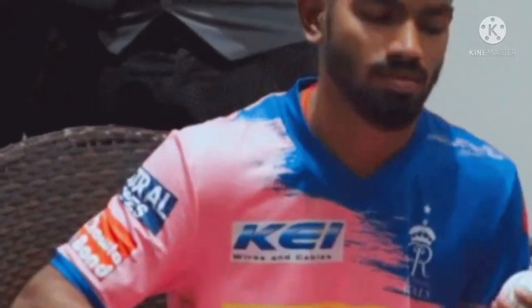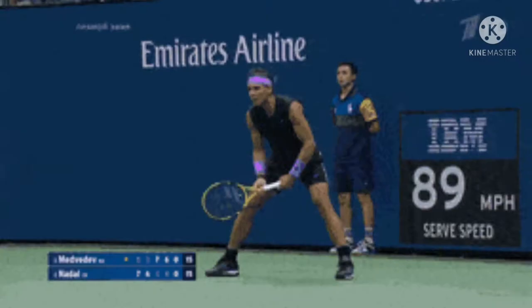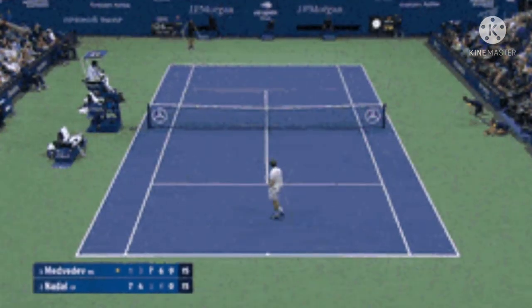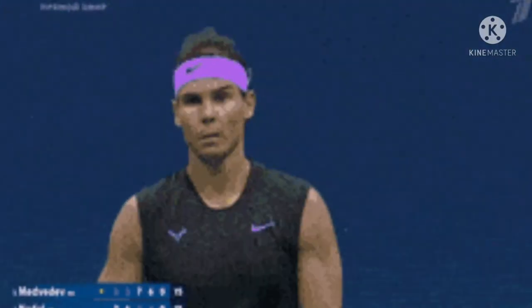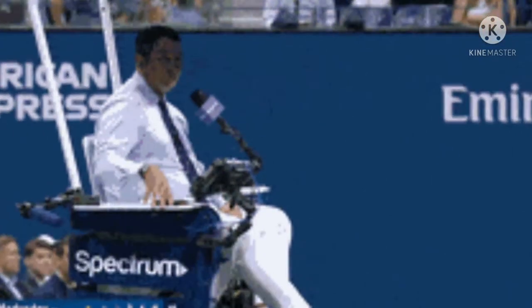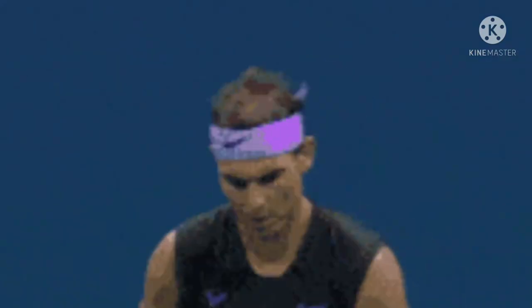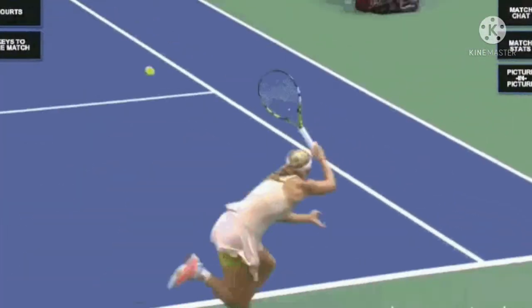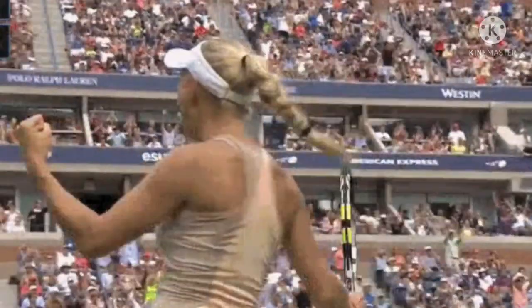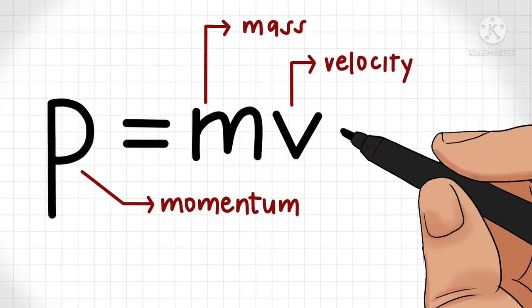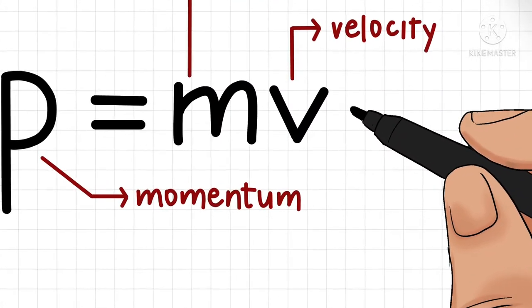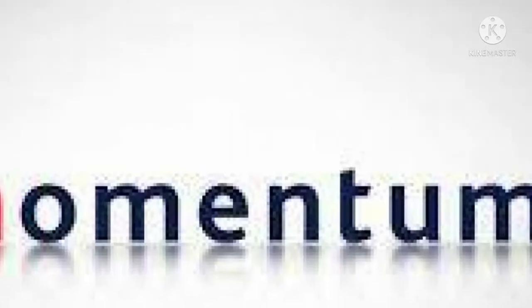Now if we throw two cricket balls of the same mass at different speeds or velocities, it will be found that more force is required to stop the cricket ball which is moving with higher velocity, and less force is required to stop the cricket ball moving with lower velocity. So we conclude that force required to stop a moving body is also directly proportional to its velocity.